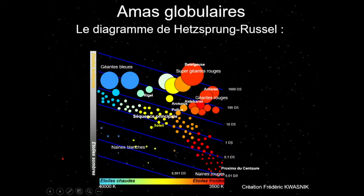On a aussi les cadavres stellaires : les naines blanches. C'est ce qui arrive au noyau d'une étoile après son stade de géante rouge — elle finit par évaporer sa photosphère externe, qui part en nébuleuse planétaire (comme M57). Le noyau s'effondre et donne une naine blanche, d'environ la taille de la Terre, avec une masse stellaire — une densité remarquable. Les étoiles à neutrons et les trous noirs ne figurent pas dans le diagramme HR car ils n'ont pas de luminosité intrinsèque visible.